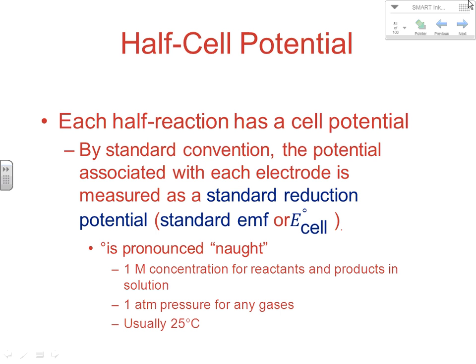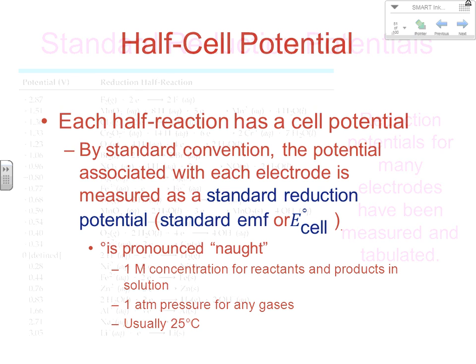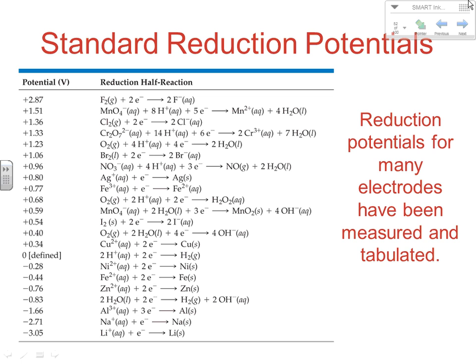The naught symbol means we're under standard conditions: one molar concentrations for solutions and one atmosphere pressure for gases. Standard state doesn't require 25 degrees Celsius, but the tables we look at usually mention room temperature. So this is an example of standard reduction potentials like you'd see at the end of the book.